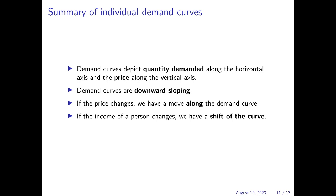And if the income of the person changes, we would have a shift of the curve. So if the income level increases, the curve would shift outwards. For any given price, quantity demanded would increase. And if the income level decreases, the opposite would hold true.